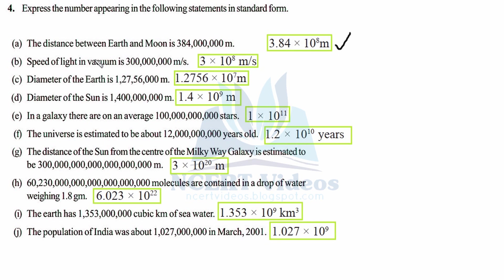Part (b): speed of light in vacuum. Vacuum means where there is no air — outside Earth's atmosphere it is total emptiness. The significant digit is only 3. You put the decimal here: 3.0, and count the digits to the right — 1, 2, 3, 4, 5, 6, 7, 8 — giving 10 raised to power 8. So the speed of light is 3 × 10⁸ meters per second. Counting all digits: 9 total, 9 minus 1 is 8. From now on we'll use this counting method.